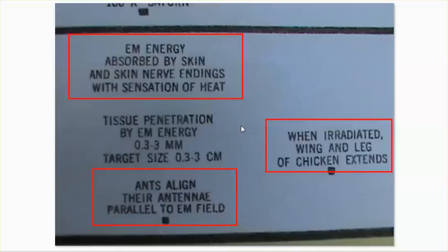I'll say it again — the small cell structure, they're putting this out all over. That's the prison that Americans are just so happy to get because they'll be able to download faster. It's the prison. It's the high resolution surveillance. It's the perimeter security. If they want to keep people out of certain neighborhoods — the wealthy — perimeter security, you don't get to go.